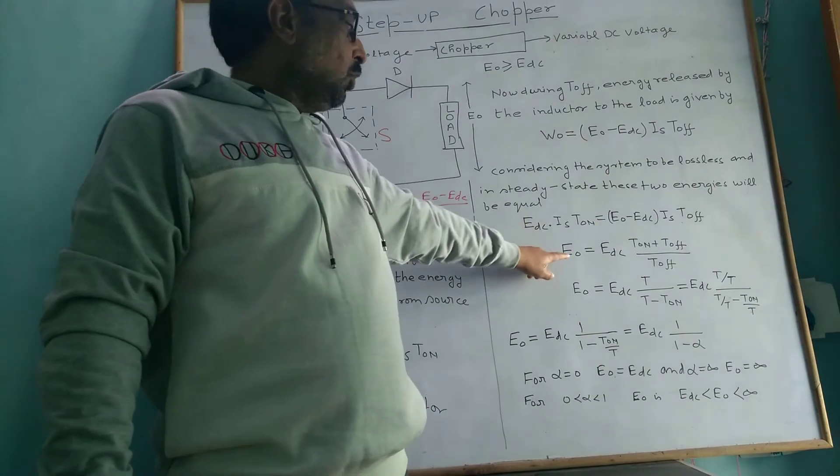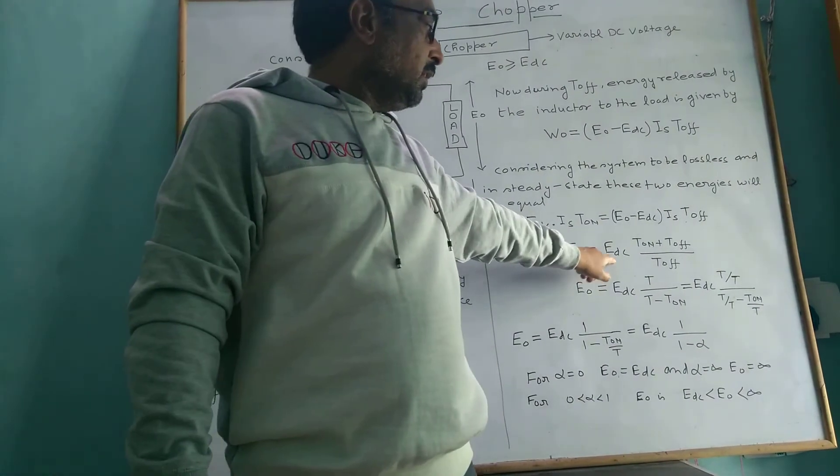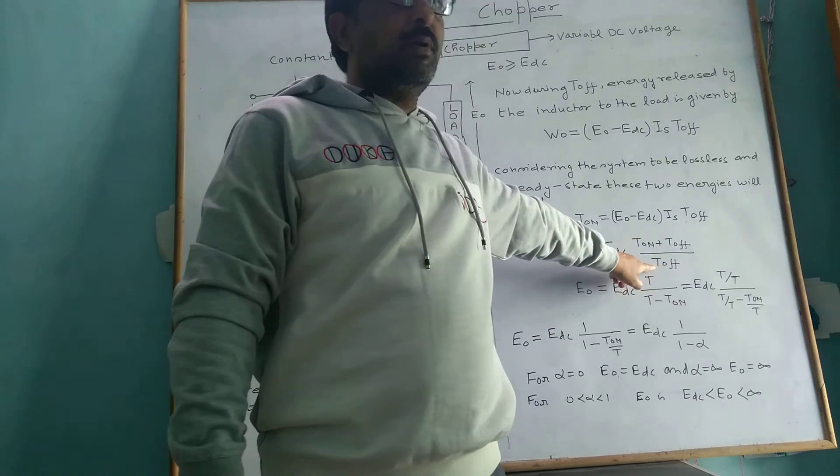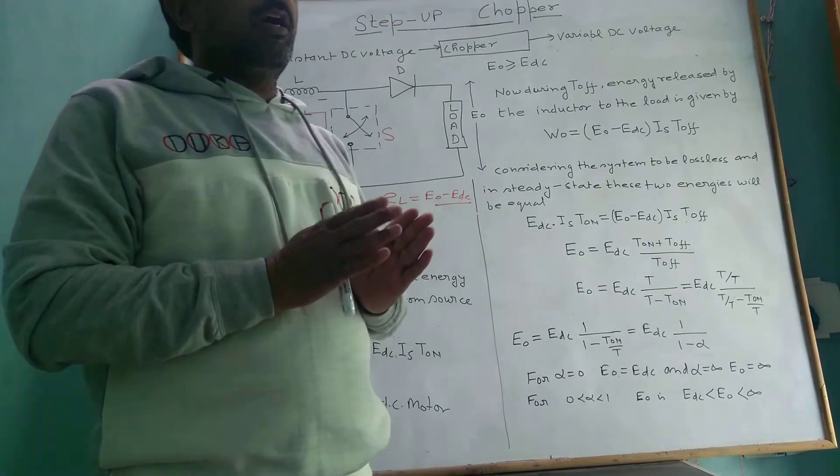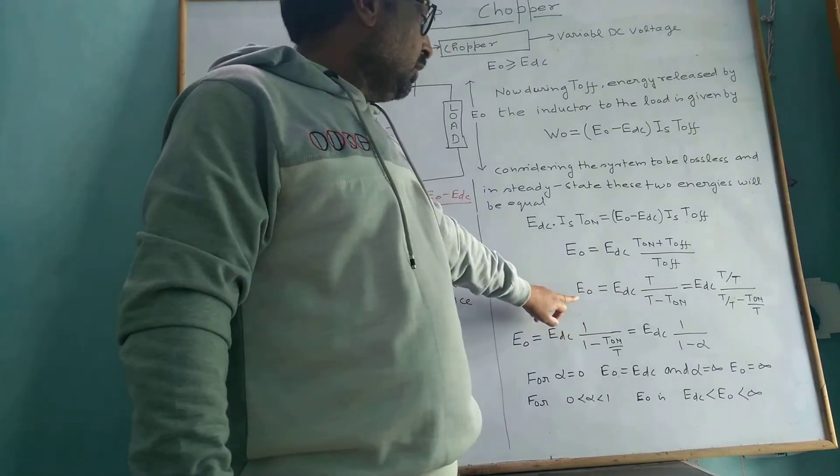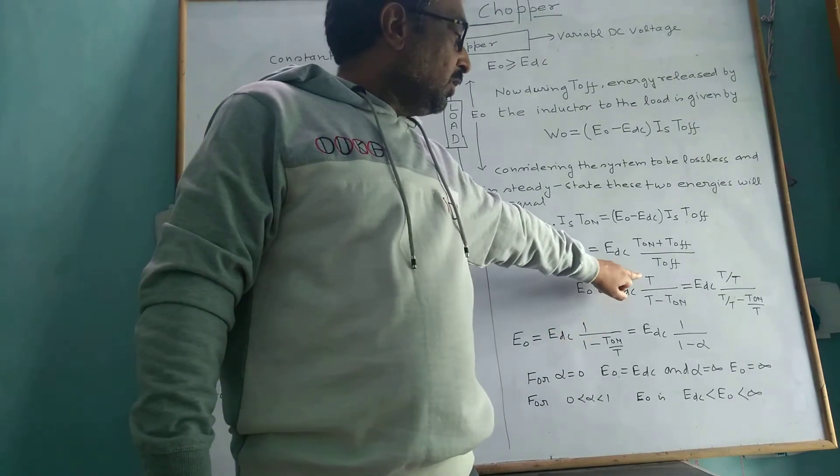If we solve this, we get E₀ equals E_DC times T_on plus T_off divided by T_off. T_on plus T_off equals T, so E₀ equals E_DC T divided by T minus T_on.